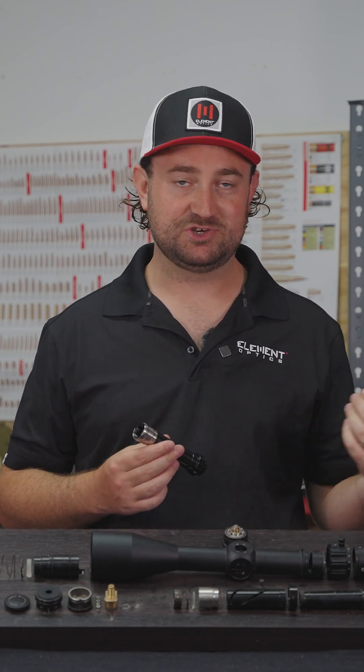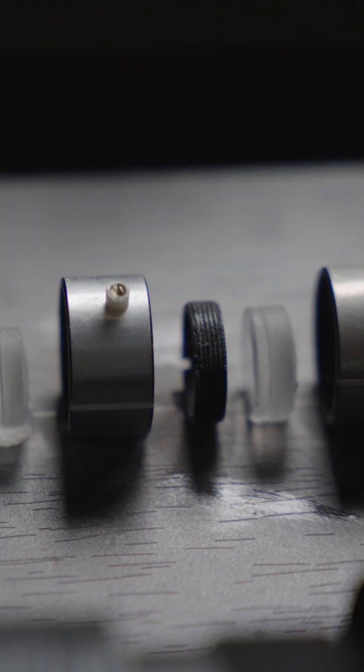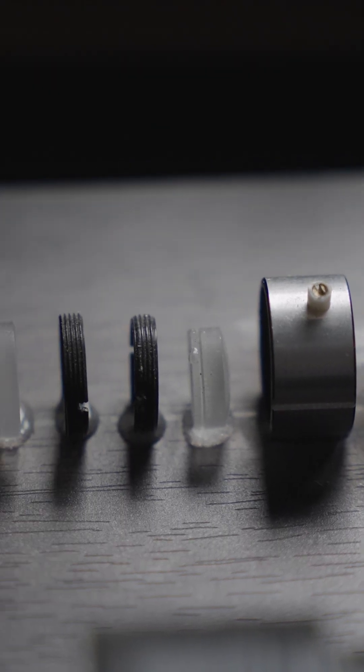A bigger body tube does not mean better light transmission or a brighter image. It just means there's more space for the erector tube. It's the erector tube itself that determines the optical performance of your rifle scope.